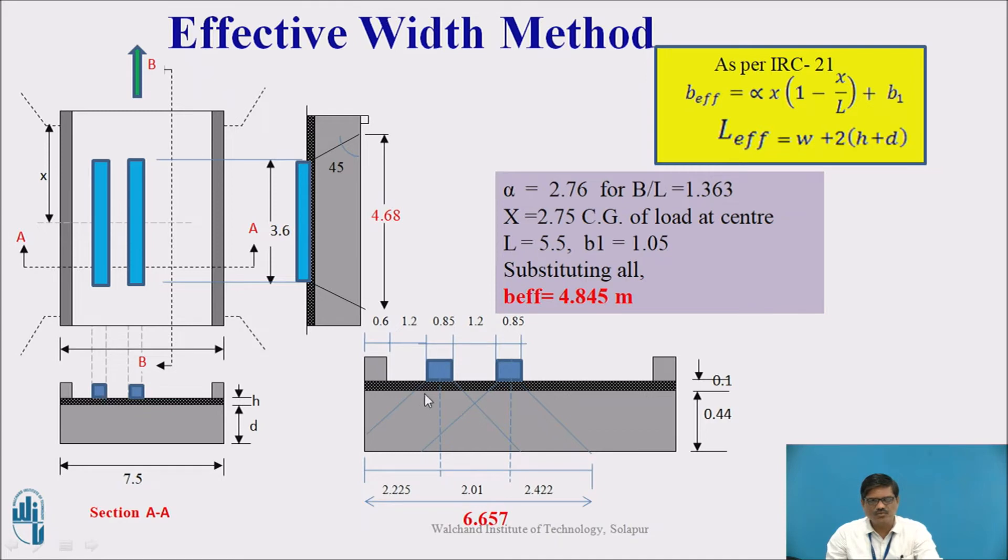0.85 is the width, so 0.85 plus 0.1 on this side, 0.1 on this side, it comes out to be 1.05. Substituting all in this equation of B-effective, we get the value as 4.845 meter.